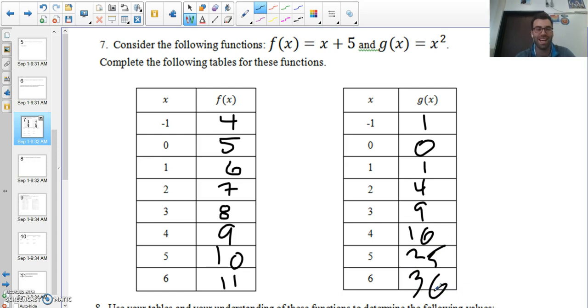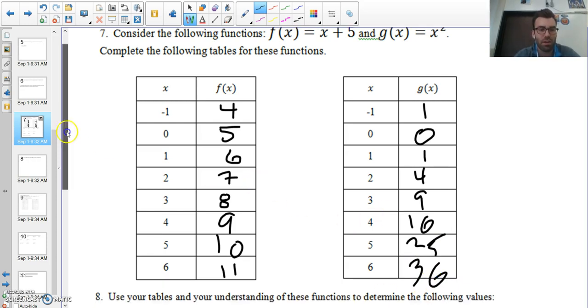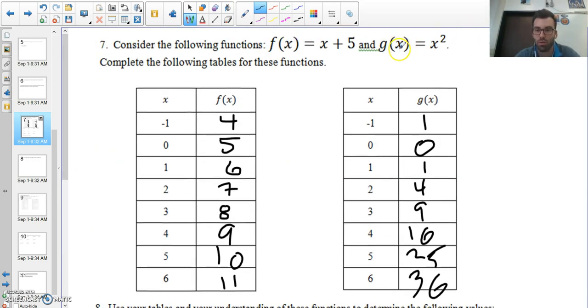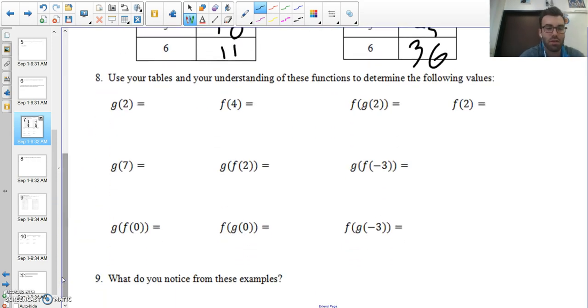Now here's where things get kind of funky. First of all, g of two, we know what g of two is. I take two and plug it into x into my equation. Well, luckily, I already did that in this table. I found out if I plugged x into g of x, if I plug two in for x, I get four. So g of two is four.